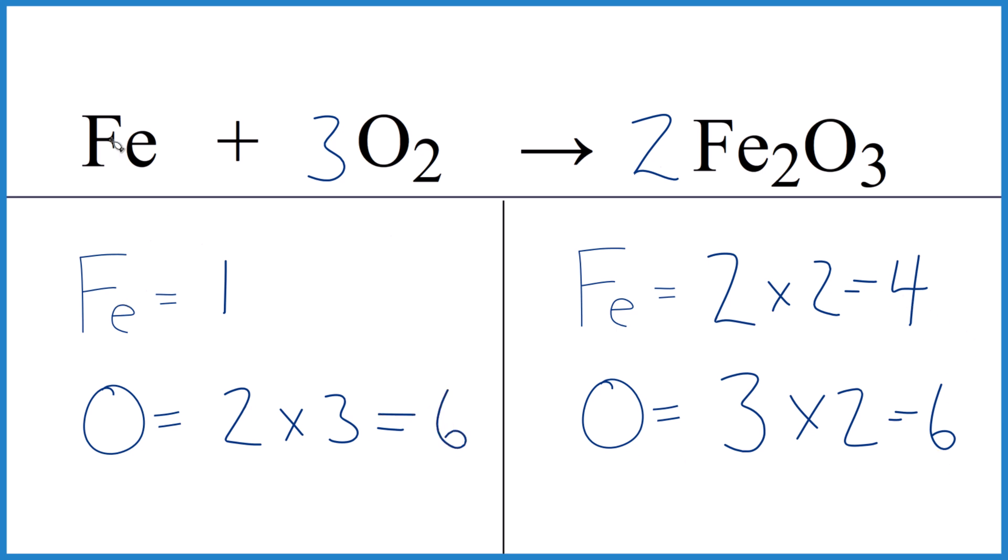I need four irons. Iron's by itself. Put a four here. Four times the one, we end up with four iron atoms, and this equation's balanced.